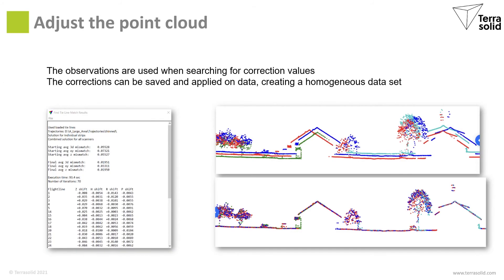After collecting a number of observations you can search for correction values in the data. When you solve for the corrections you get a report with some statistics and also an overview of all the corrections made. The corrections can be saved and later applied on the data — both on the observations and on the actual LiDAR points, and also on the trajectories if you need to.